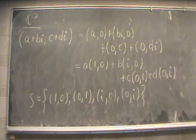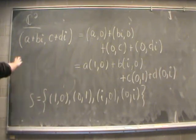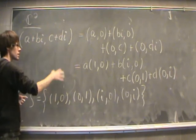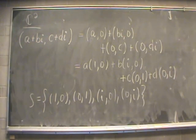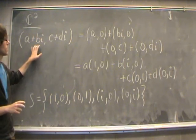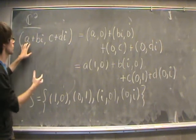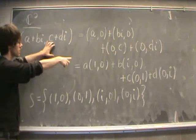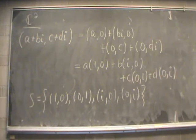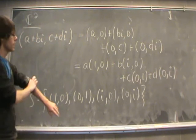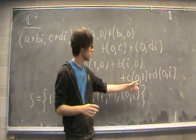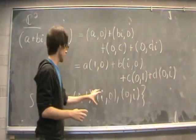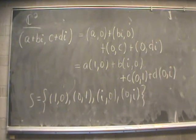Next, take the vector space C2 as a real vector space — ordered pairs of complex numbers. We write a general vector as (A+Bi, C+Di) and break it into a sum of four vectors involving A, Bi, C, and Di. Factoring out A, B, C, and D gives a linear combination of four vectors, which form our spanning set. The span of those four vectors equals C2.